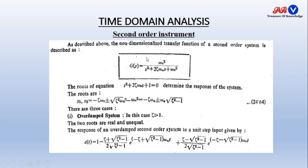The response of second order systems is always described by the characteristic equation s² + 2ζωn·s + ωn² = 0. The roots of this equation determine the response of the system. Since it is a second order equation, there are two roots s1 and s2. There are three cases: we may have an over damped system, a critically damped system, or an under damped system.